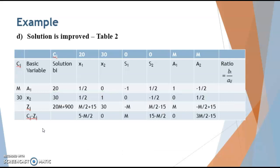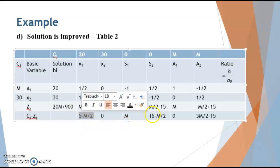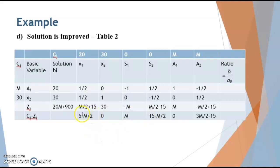You can check these values while solving the question at home, and for any doubts write in the comment section. After this table, check for optimality again. Not all values are greater than or equal to 0 because negative M divided by 2 is still negative. So we again identify the largest negative value, which in this case is the one with the M term, as M is larger than 50. This becomes the new incoming variable.